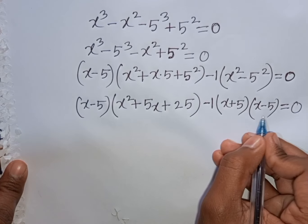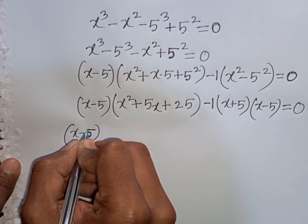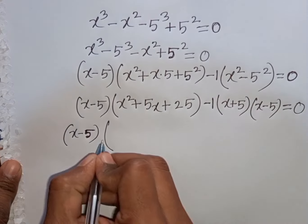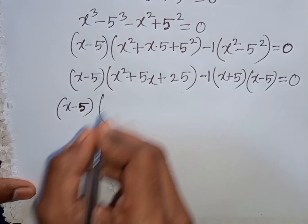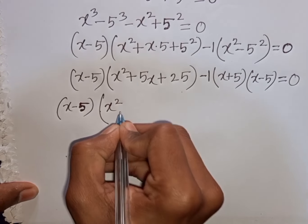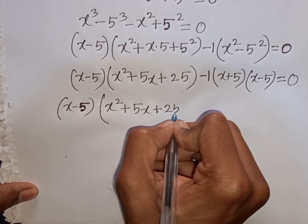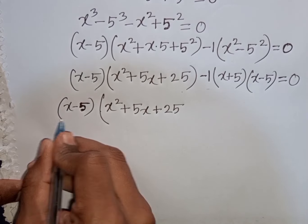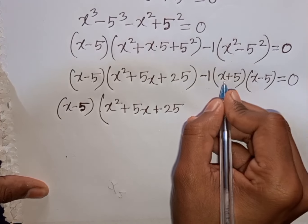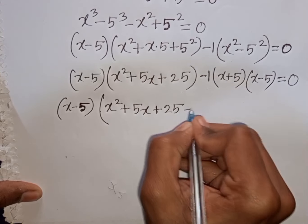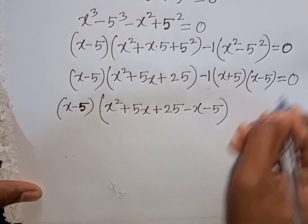Now we see x minus 5 is common. So take common x minus 5. Bracket x minus 5 is out of the bracket. This x minus 5, this x minus 5 will be cancelled, so we have x squared plus 5x plus 25. Then this x minus 5 and this x minus 5 will be cancelled, so we have minus 1 multiplied by x plus 5, which gives minus x minus 5. Then bracket close, equal to 0.